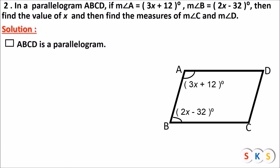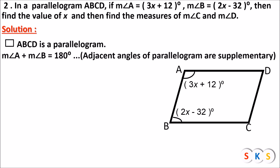ABCD is a parallelogram. Therefore, angle A plus angle B equals 180 degrees. Angle A and angle B are adjacent angles of a parallelogram — or you can say angle A and angle B are consecutive angles, meaning angles which come one after the another. And consecutive angles of a parallelogram are supplementary. Therefore, angle A plus angle B equals 180 degrees.